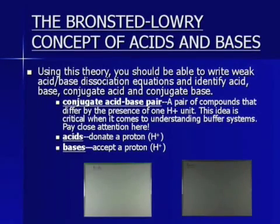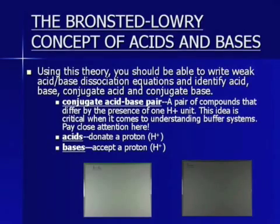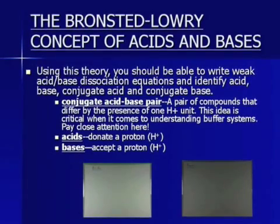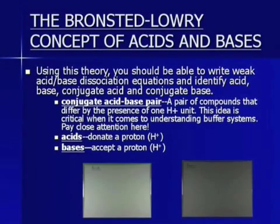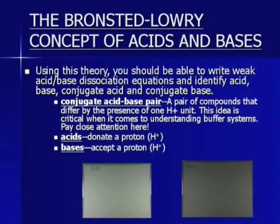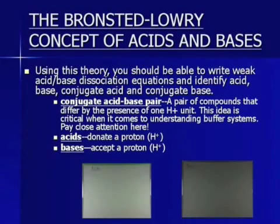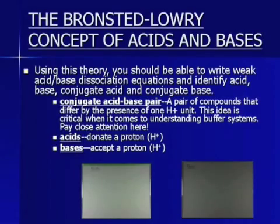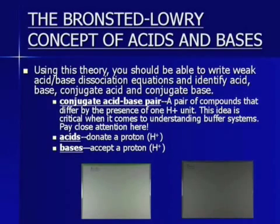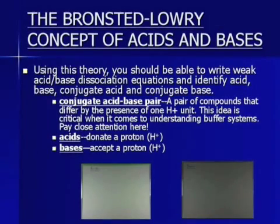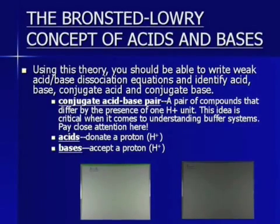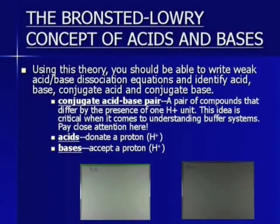A conjugate acid-base pair is a pair of compounds that differ by the presence of one H+ unit. This idea is critical when it comes to understanding buffer systems, something we'll cover in chapter 15. When we're talking about a conjugate acid-base pair, we don't mean that both of them are conjugate acid and base. One is an acid which creates a conjugate base. One is a base which creates a conjugate acid.